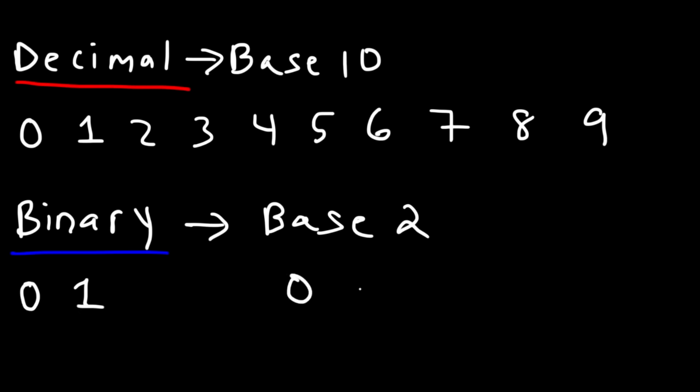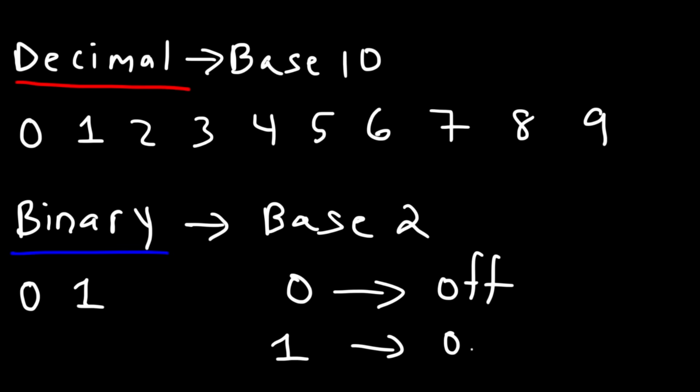It's very useful for computers or any type of digital circuits. In a typical digital computer, zero means off, and one means that the system is in the on state.